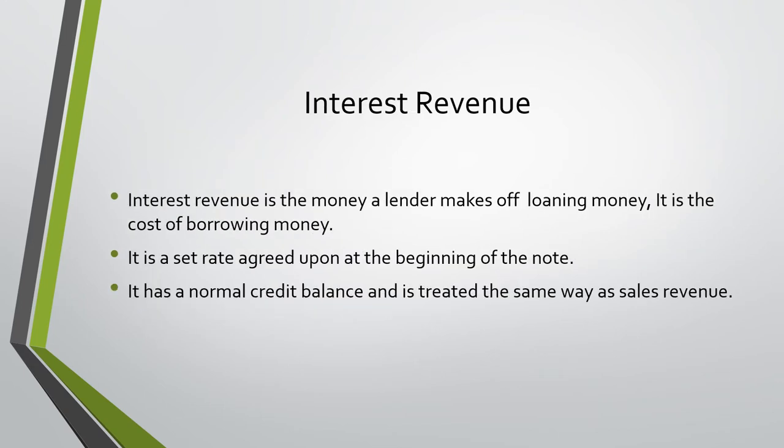Interest revenue is the money a lender makes off loaning money. It is the cost of borrowing money for the borrower. It is a set rate agreed upon at the beginning of the note. It has a normal credit balance and is treated the exact same way as sales revenue.